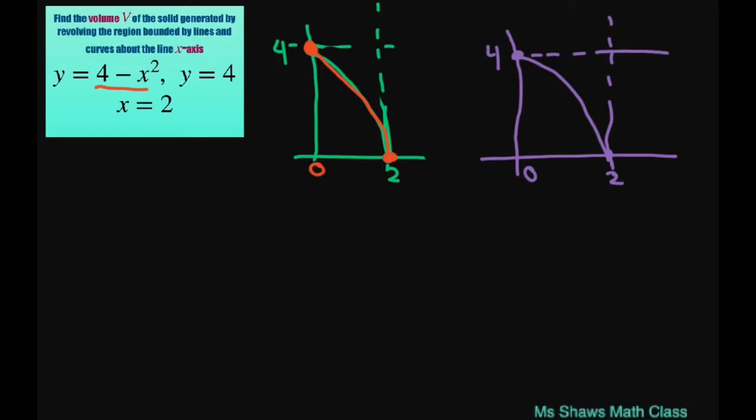So looking at this graph, if I look at this part here for the cross section, this curve is going to be x equals square root of 4 minus y. And this would be your y right in here.